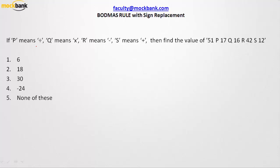Let's solve one more problem. The problem says: P means division, Q means multiplication, R means subtraction, and S means addition. The expression is 51 P 17 Q 16 R 42 S 12. We need to solve this by applying the BODMAS rule.